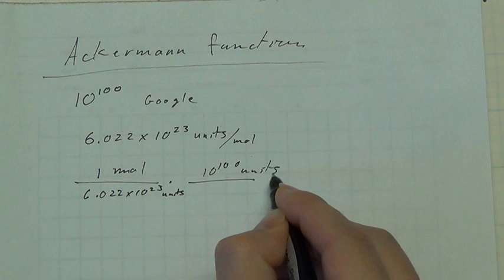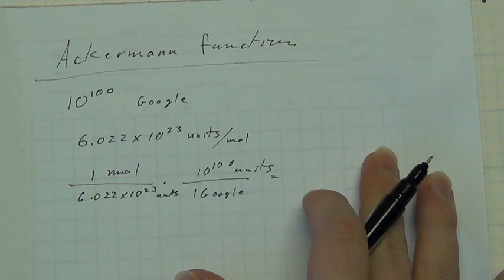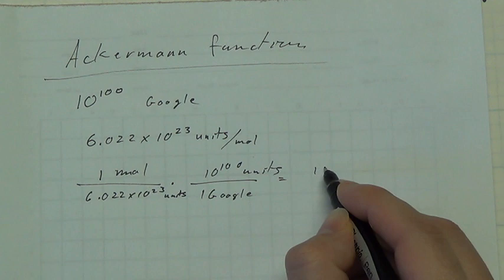And there are 10 to the 100 units in a Google. Alright, well, that gives us,